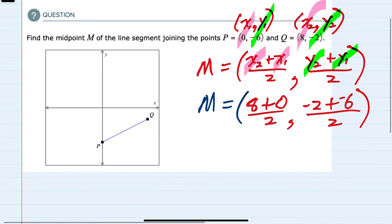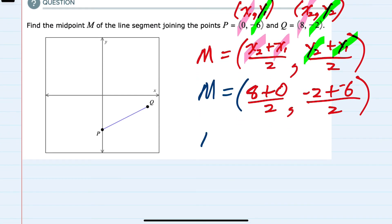Now that we've made the substitution, we can simplify. The X value is 8 plus 0, which is 8 over 2. The Y value is negative 2 plus negative 6, which is negative 8, also over 2.